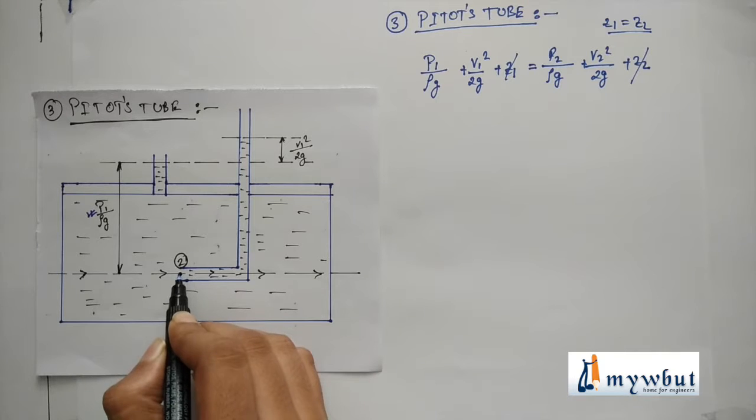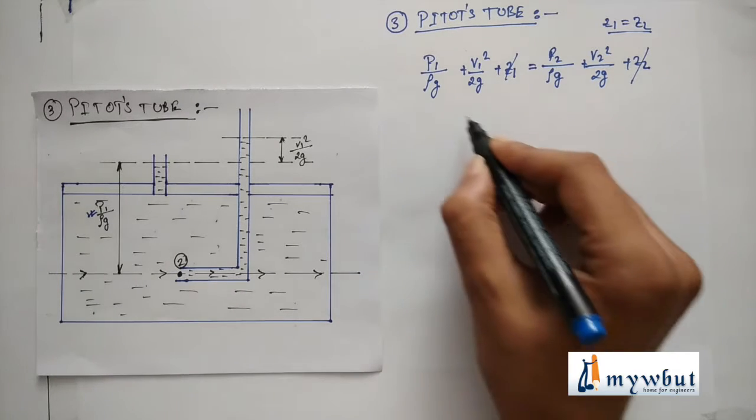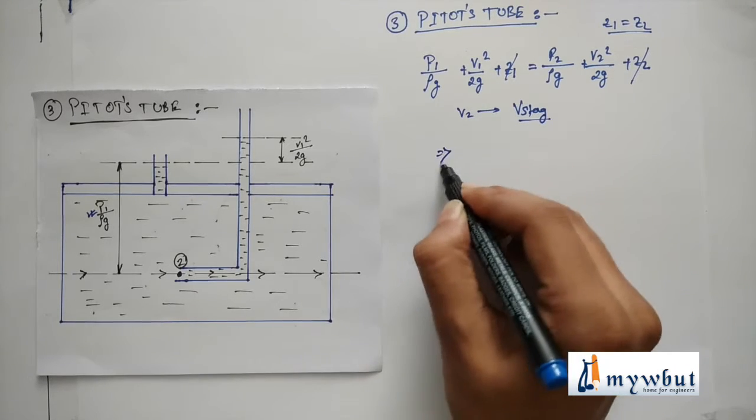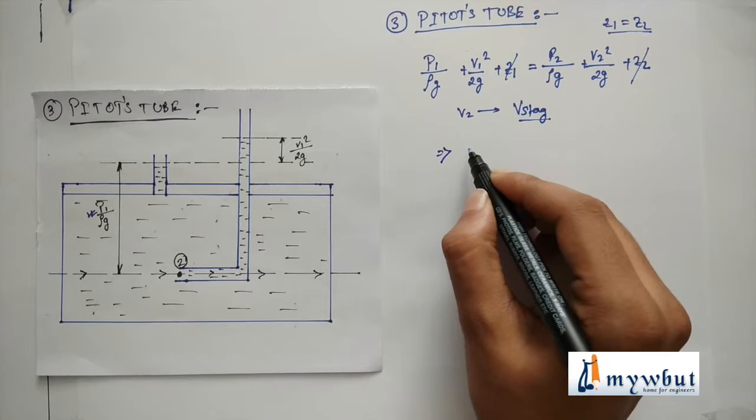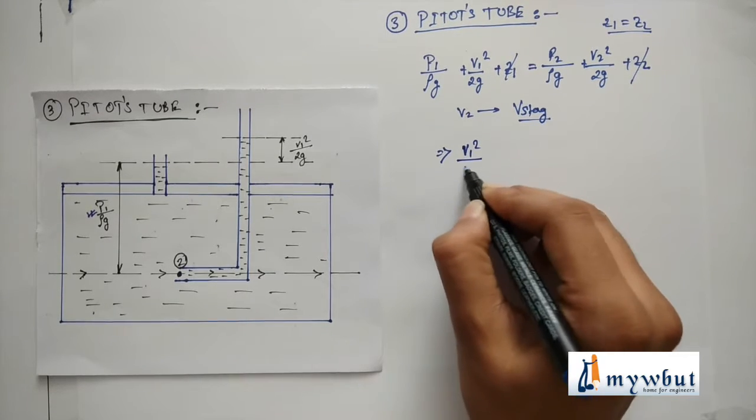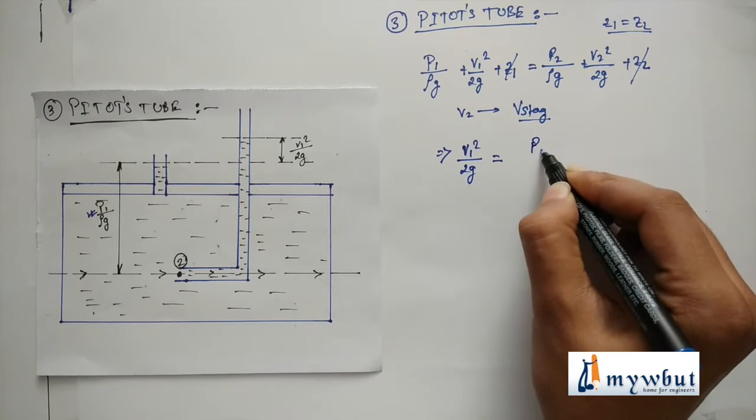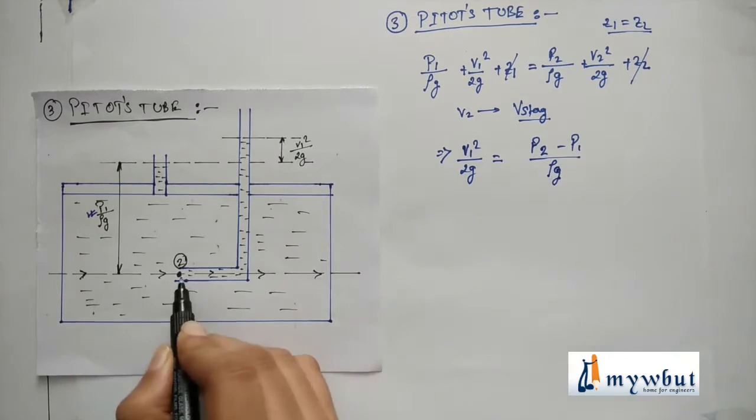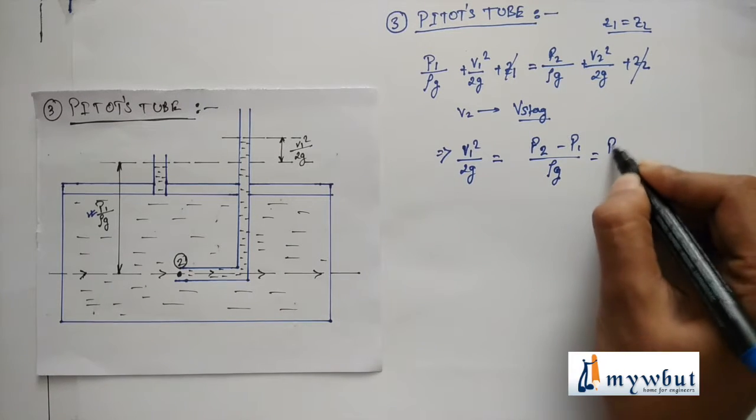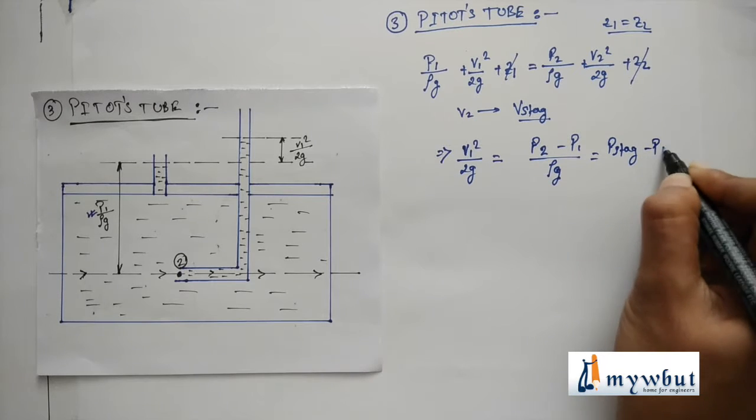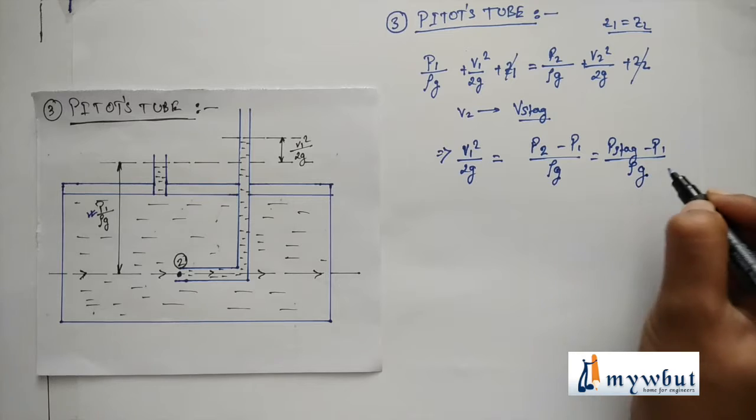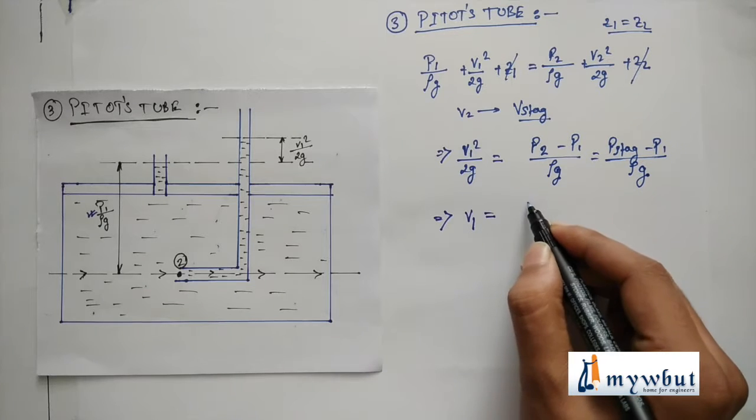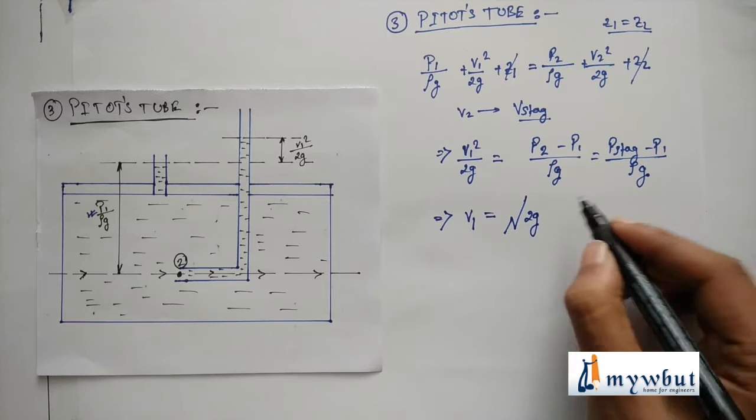v₂, and at point 2 since the water is stagnant, so v₂ can be written as v stagnation. Hence we get the value as v₁ square by 2g is equal to (p₂ minus p₁) by ρg. If we refer p₂ to be the pressure of point 2, we can refer p₂ as p stagnation minus p₁ by ρg, which implies that we get v₁ to be root over 2g into (p stagnation minus p₁) by ρg whole root.